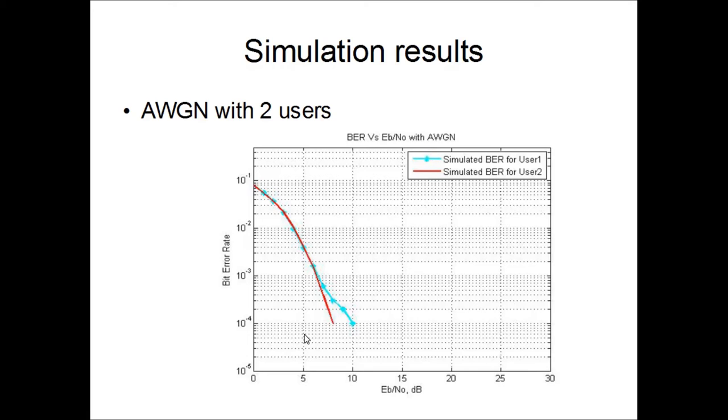This is the simulation result for an AWGN with a couple of users. As already shown, the data is decreasing, and so the Eb/N0 is increasing as the bit error rate is decreasing.